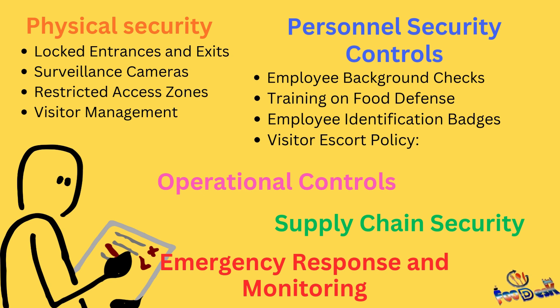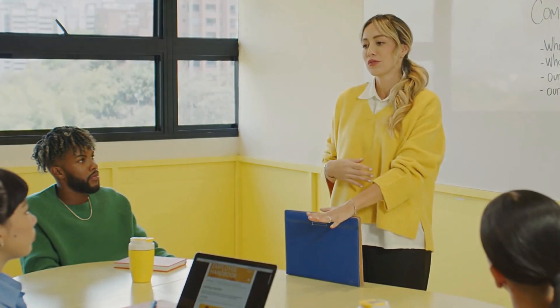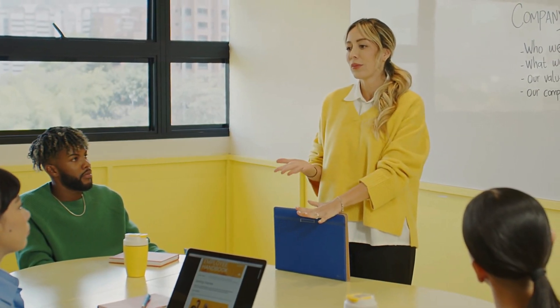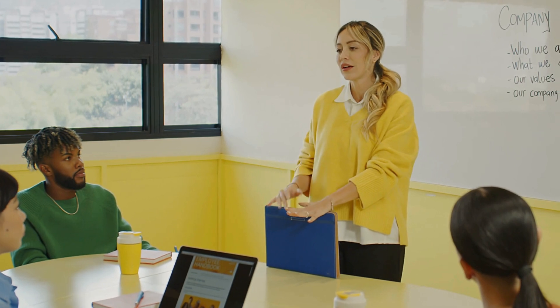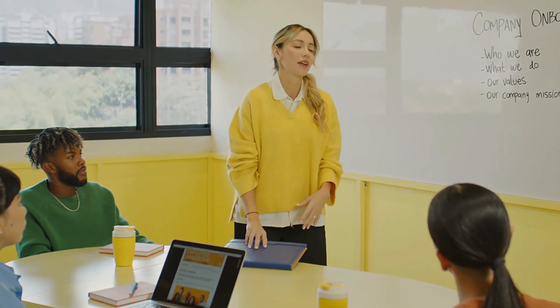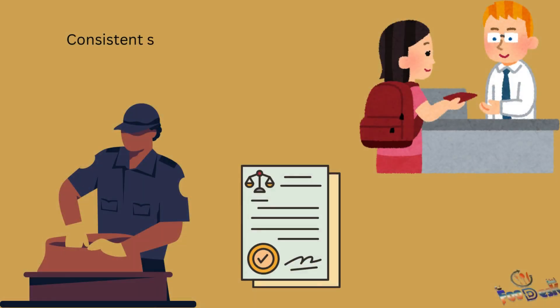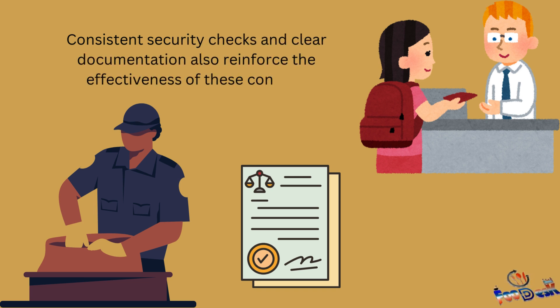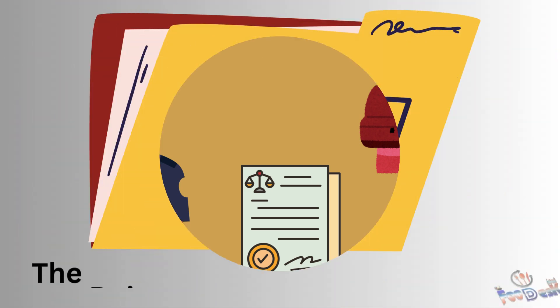This includes physical security such as restricted access to sensitive areas, monitoring systems, and tamper-evident packaging. Consider training employees on food defense, empowering them to recognize and report unusual behavior or incidents. Consistent security checks and clear documentation also reinforce the effectiveness of these controls.